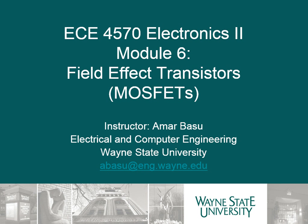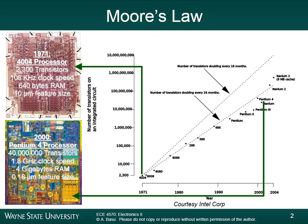This is the last and important module on field effect transistors. Since there are questions about this, let's first convince you why this is the most important device you'll study in this class. This slide shows Moore's Law — the number of transistors in a microprocessor. When we talk about the number of transistors, we are talking about MOSFETs, field effect transistors. The field effect transistor is the basic building block of a microprocessor.